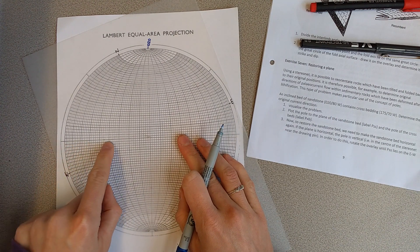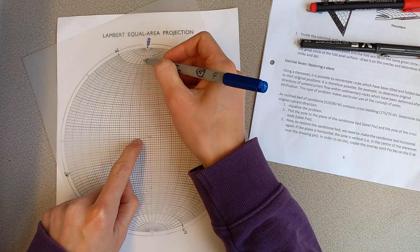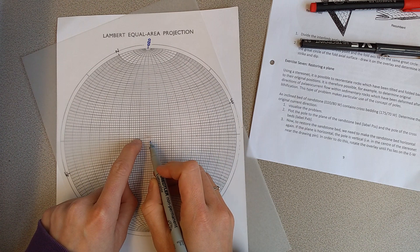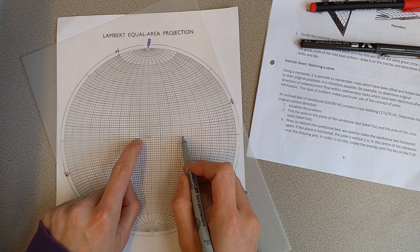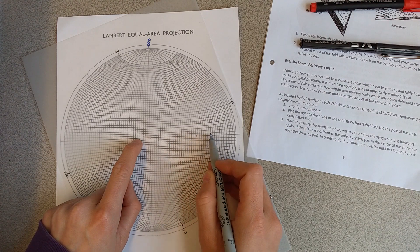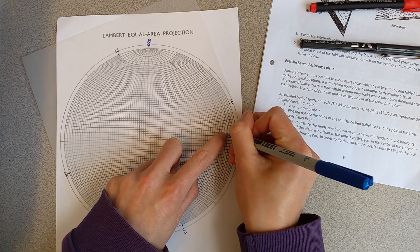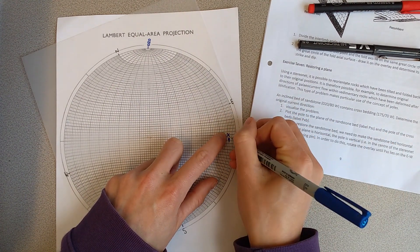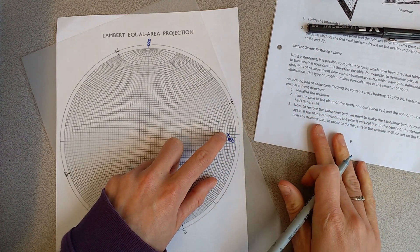We're going to do 80 west so the west side of my tracing paper is over here. I would count in to 80 which is here. Because we're going to do a pole we're going to count 90 beyond that, so 10, 20, 30, 40, 50, 60, 70, 80, 90. I'm going to put a cross there and call that PSS for the bed.